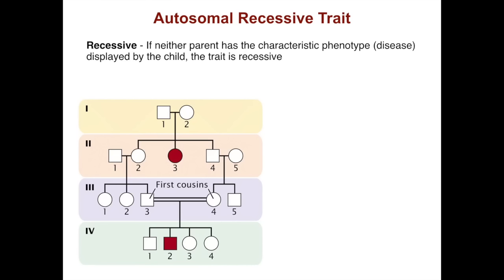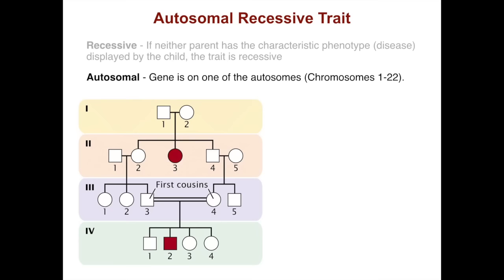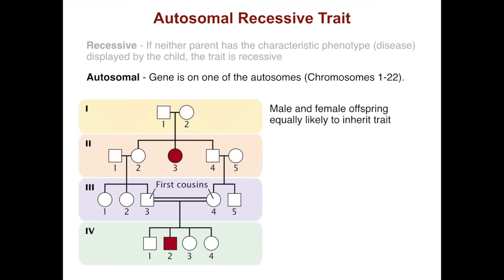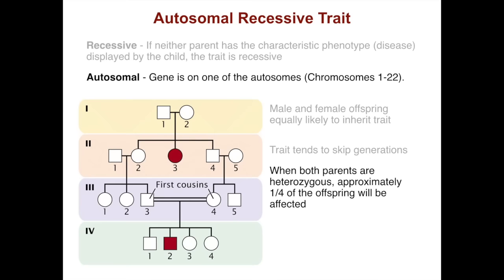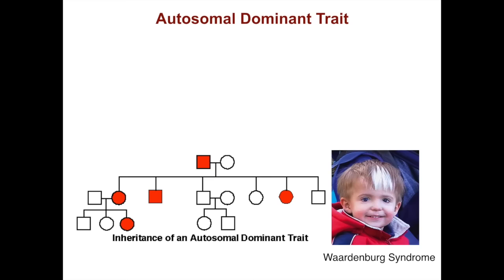This is a typical pedigree for an autosomal recessive trait. If neither parent has a characteristic phenotype — let's say a disease — but the disease is displayed by the child, the trait is likely recessive. The trait will be autosomal if the gene is on one of the autosomes, so male and female offspring are equally likely to inherit it. Traits tend to skip generations, and when both parents are heterozygous, approximately a quarter of offspring will be affected. The trait appears much more frequently among children of consanguine marriages, as shown in the fourth generation.